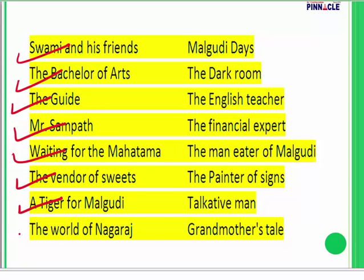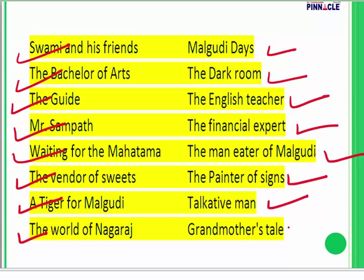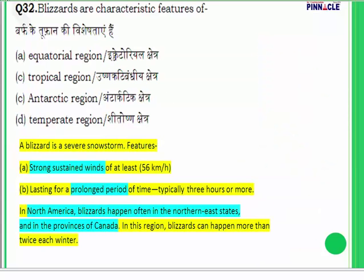Other books by R.K. Narayan include Malgudi Days, Dark Room, English Teacher, Financial Expert, The Man-Eater of Malgudi, Painter of Signs, Talkative Man, and Grandmother's Tale. This is not an exhaustive list, but these are among the most famous ones.